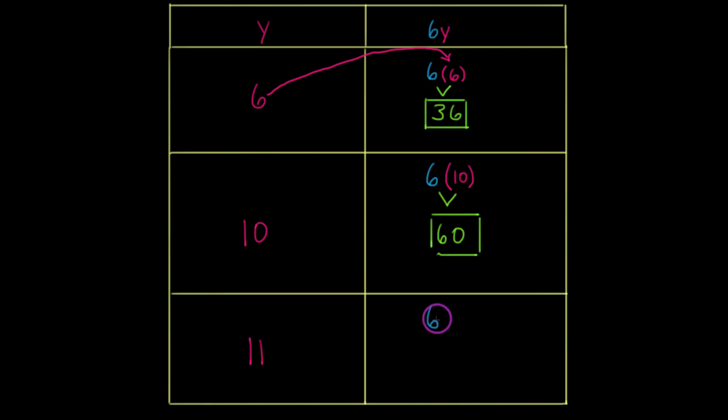And finally, six times 11. So six times 11 will give a value of 66. Let's write that down here. Six times 11 is 66, and now I can box that final answer up.